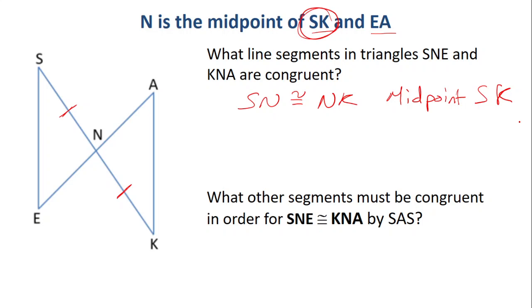That comes from the midpoint of SK. We also know that EN and NA are the same. So that comes from the midpoint of EA.